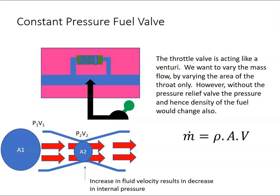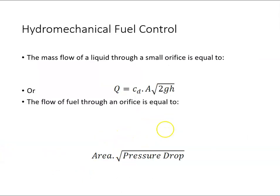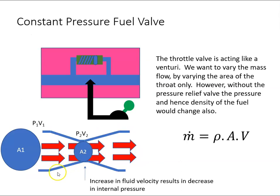As I said at the outset, the whole premise of metering the fuel flow is based on this formula: area and pressure drop. If we have a venturi and vary the area with the throttle valve, we also vary the pressure drop, so we have two variables. We need to eliminate one of those variables.